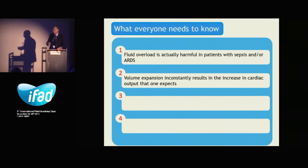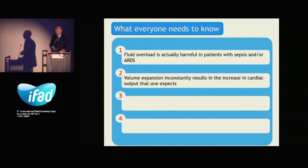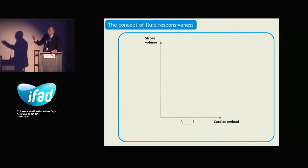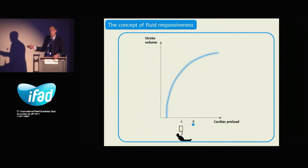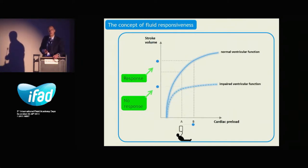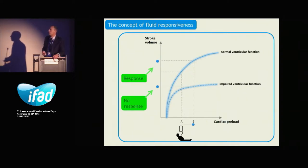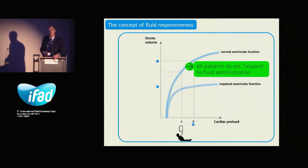The second fact is that volume expansion does not constantly result in the expected increase in cardiac output. This is due to basic physiology — the concept of fluid responsiveness — and the relationship between stroke volume and cardiac preload. When we give fluid to patients, we expect stroke volume to increase, but the relationship between stroke volume and preload is curvilinear: the Frank-Starling relationship. The slope varies with ventricular function, which explains why the same volume expansion could induce a positive or negligible increase in stroke volume. In other words, all patients do not respond to fluid administration.